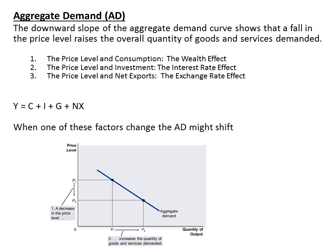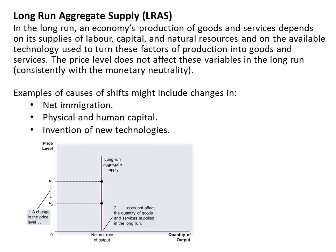Another important factor is that any change in the main components of GDP — such as net exports, government purchases, investment, and consumption — will explain a shift of the aggregate demand curve. For example, if the government decides to purchase more, there is going to be a shift to the right of the aggregate demand.